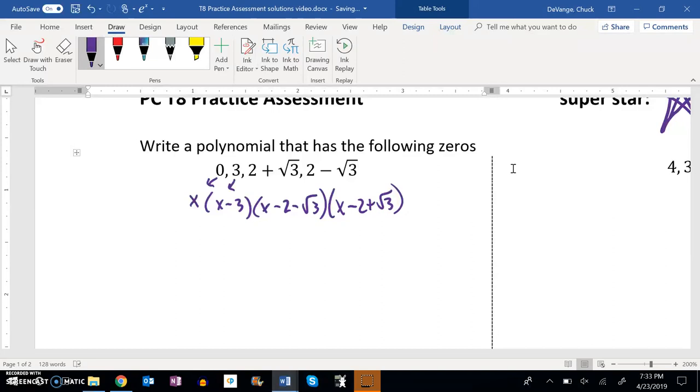If you want to use the sum and difference product rule, multiply these two, do these three together, and then multiply the answer by x. But I'm just going to power it out. So if I multiply these two together, that's pretty easy. X times x is x squared, x times negative 3 is negative 3x. So there's that multiplied out. Now if I multiply this one out, there's lots of ways to do it.